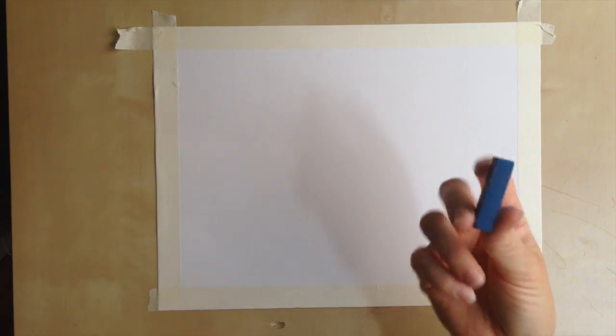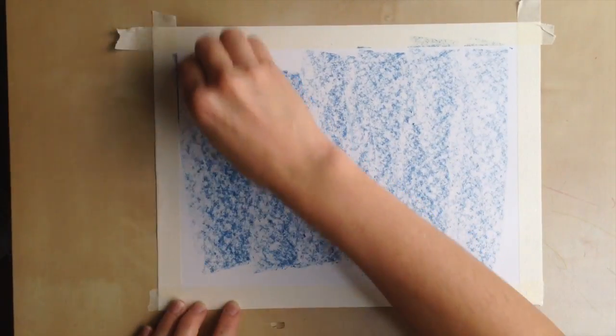First thing you want to do is get your chalk, whatever color. It just needs to be dark. You can just use black and you want to put it on this way. Let's pretend my hand's the paper. You don't want to do it like that. You want to press it like this. Cover your whole paper with it.